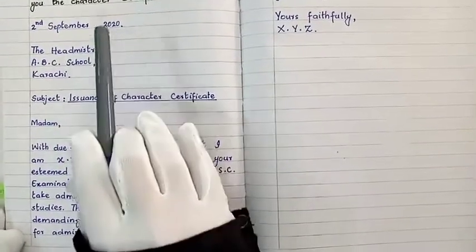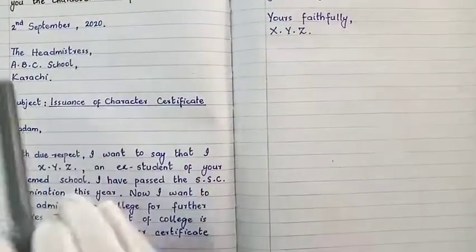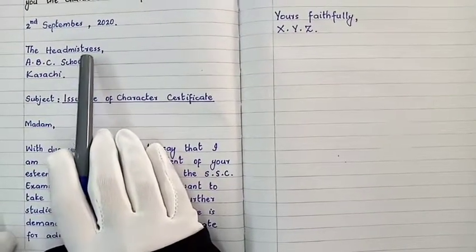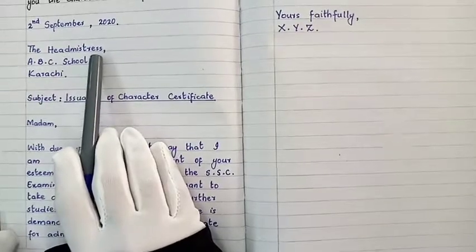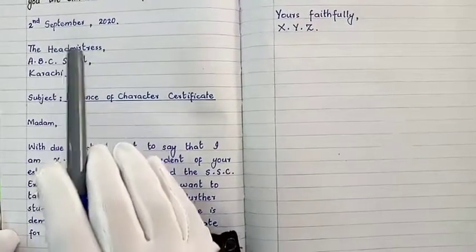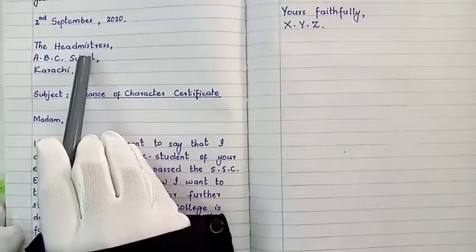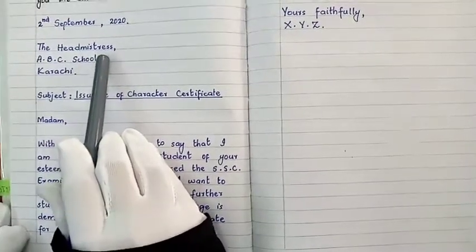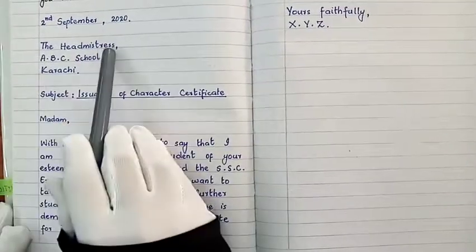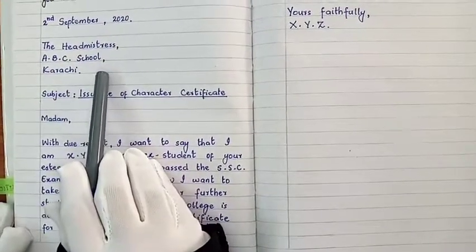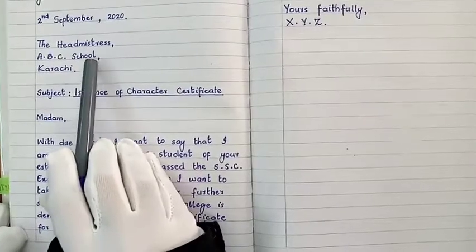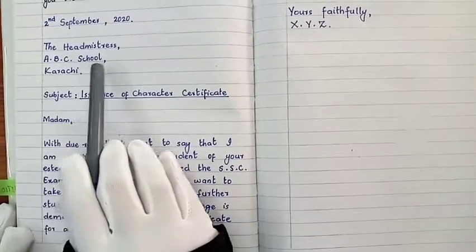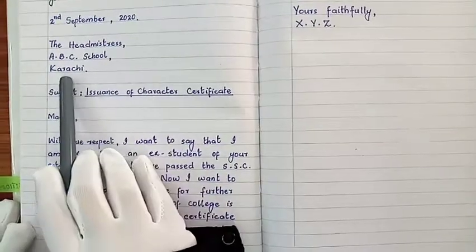Take care of every point. After the date, you will write the designation of the person to whom you are writing. You will write 'The Headmistress' here, then the name of the institution. Write the name of your school: ABC School, Karachi.